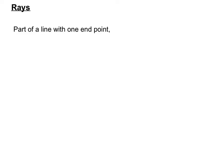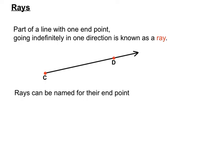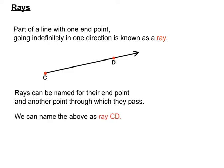A ray is a funny sort of thing — it's part of a line but it has a specific starting or ending point, so it goes indefinitely in one direction. You can see it starts or ends at point C, goes through point D and goes indefinitely off in the right-hand direction. It doesn't go to the left of C — it's kind of like half a line. Rays are named starting with their end point, so we'd call this ray CD.